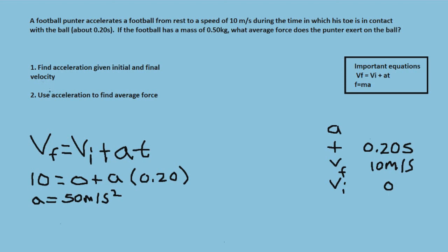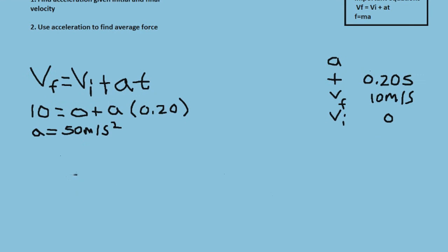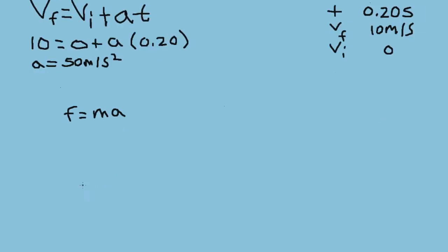Now we use the acceleration to find the average force. The average force equals mass times average acceleration, so F = 0.5 kg × 50 m/s², which gives F = 25 Newtons.